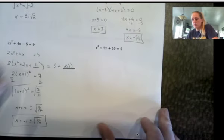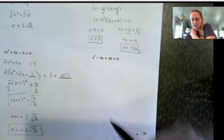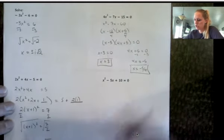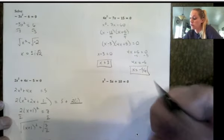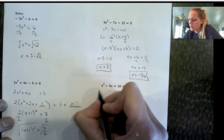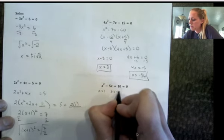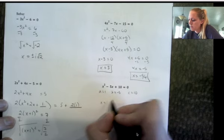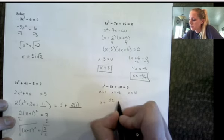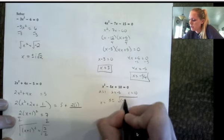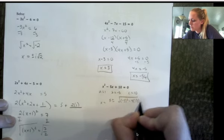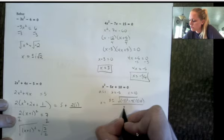This one does not factor nicely either, so I'm going to go ahead and use the quadratic formula. So then I've got one of each method here, except for graphing. So my a is 1, b is negative 5, c is 10. So here I have negative b plus or minus square root of b squared, minus 4 times a times c, all over 2 times a.